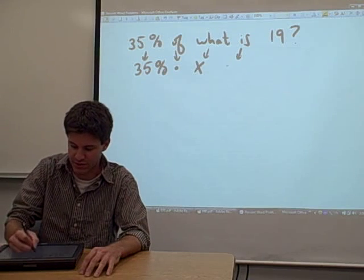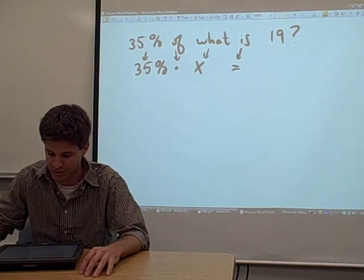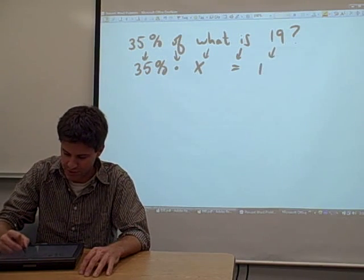Is is typically associated with equality, equal sign. 19 is just a number, so we're going to copy that down.